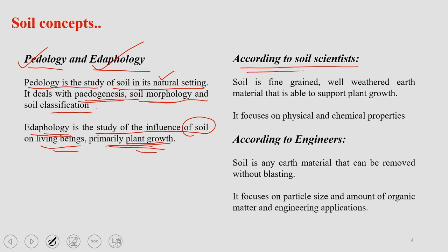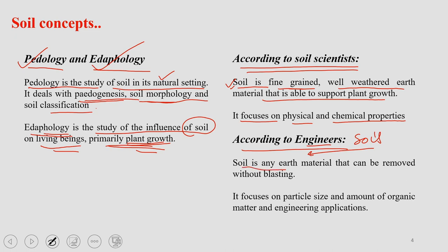Different disciplines look at soil through different philosophies. A soil scientist defines soil as a fine-grained, well-weathered earth material that is able to support plant growth, focusing on physical and chemical properties. According to engineers, the definition of soil becomes quite different — engineers look at soil as any earth material that can be removed without blasting. Engineers also focus on particle sizes, amount of organic matter, and various engineering applications.